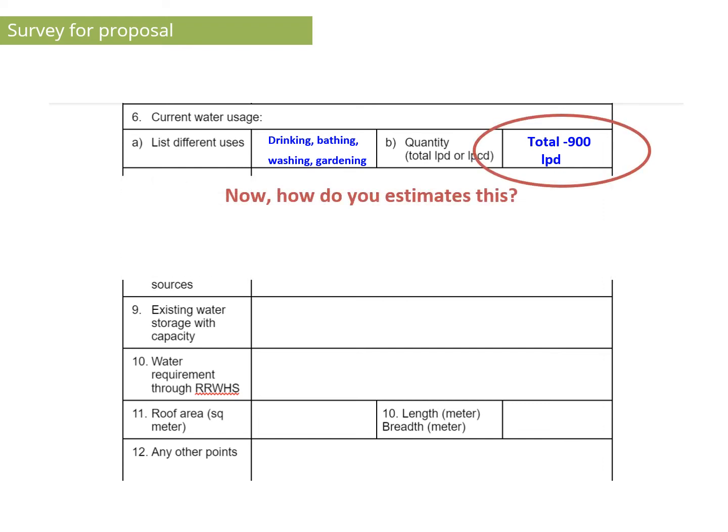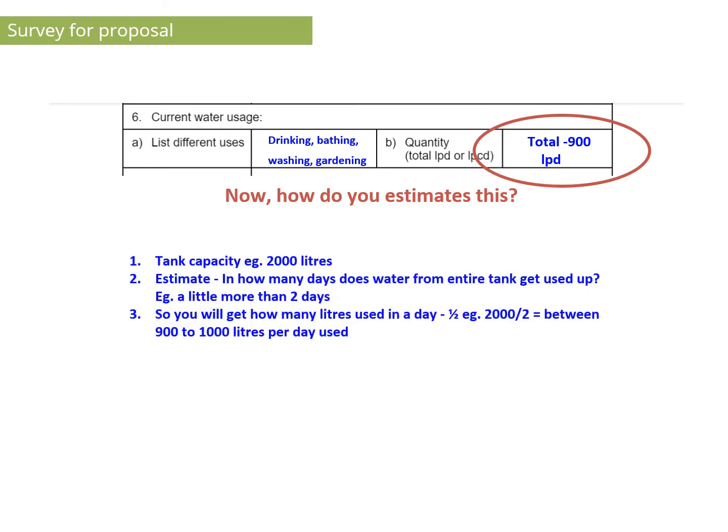It states 900 liters per day. How do you estimate this number? The tank capacity is 2000 liters, and it takes two days for the entire tank water to get used up. So you get 2000 liters tank capacity divided by two days, which is between 900 to 1000 liters of water being used per day.